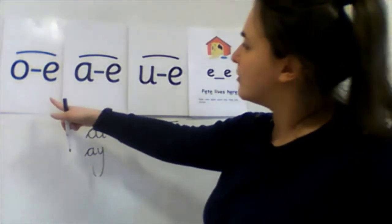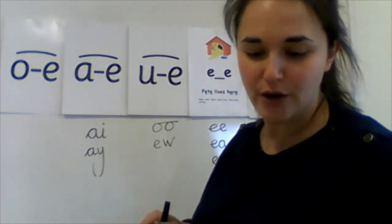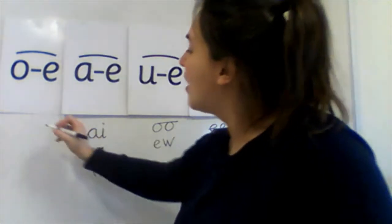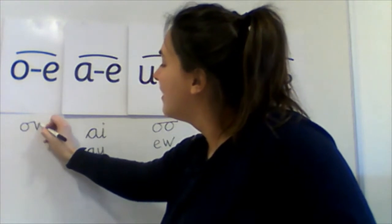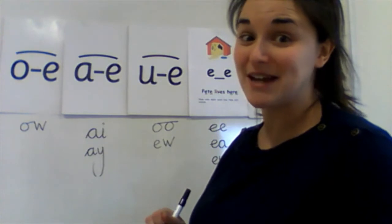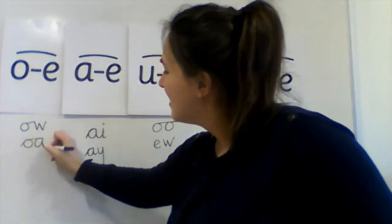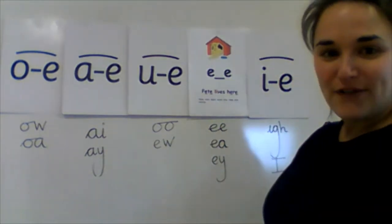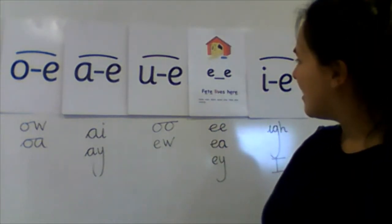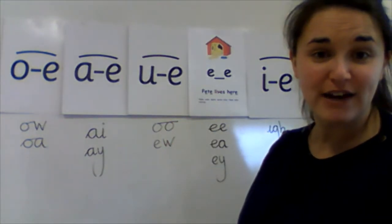We've got one more to do. O-E phone home. O-W blow the snow. O-A goat in a boat. Look at all of those sounds we have learnt and every column makes the same sound but it's written differently.